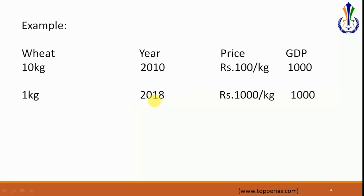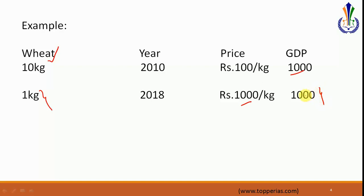For more clarity, I have used an example. Imagine hypothetically a country where only one good is produced — wheat. In the year 2010, 10 kg of wheat is produced at a price of rupees 100 per kg, so GDP is rupees 1000. Now in the year 2018, only 1 kg of wheat is produced, but the price has inflated to rupees 1000, so GDP again comes out to rupees 1000. This is the nominal GDP, because it is at current market prices.